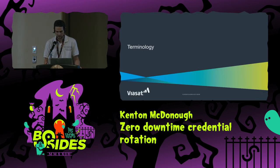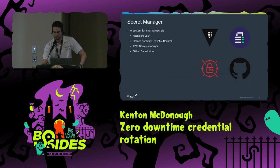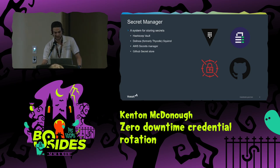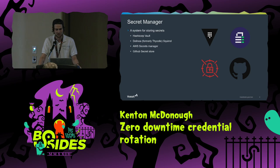Some terminology on credential management — I'm not talking about humans here, this is all backend systems, service credentials, service users, certificates. You probably have a secret manager, and if you don't, you should. A secret manager is a place to store secrets. Common ones include HashiCorp Vault, Delinea's product called Squirrel, AWS Secrets Manager, and even GitHub has one for CI pipelines. They offer encrypted storage, logs of who's been accessing your secrets, and granular access controls.